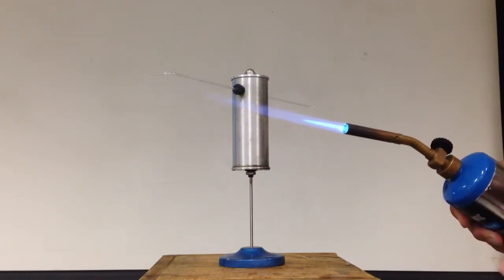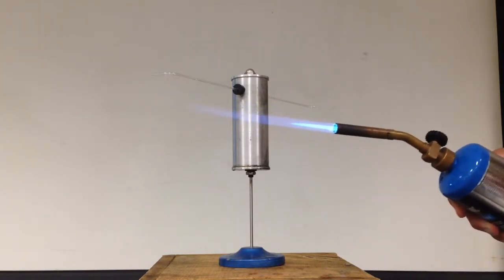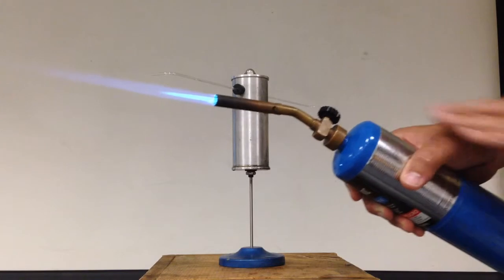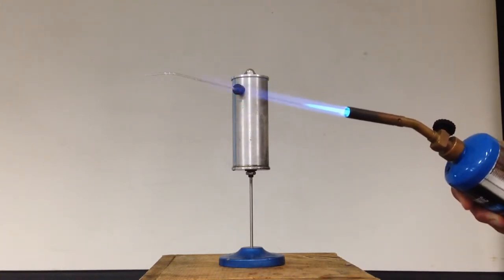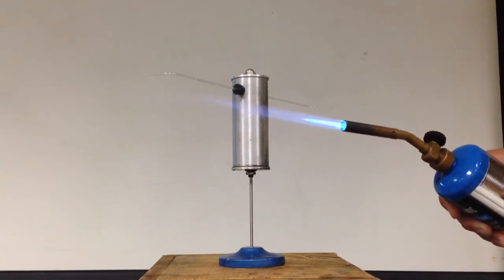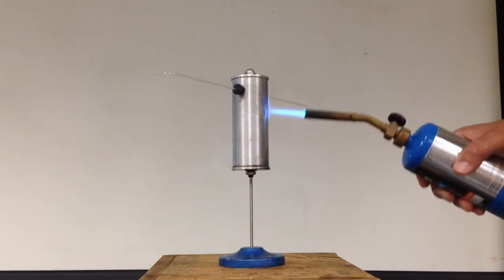They're reacting with the oxygen, and the unstable propane molecules in the torch are becoming more stable water vapor and CO2. And that difference in stability or energy is the energy released.